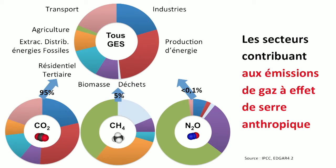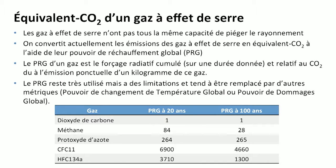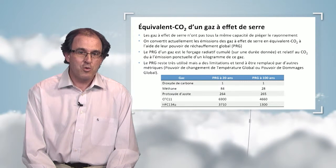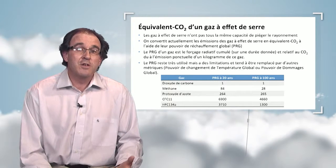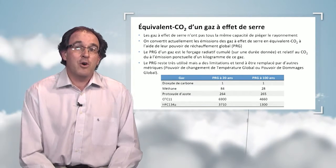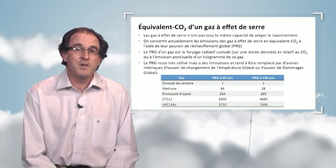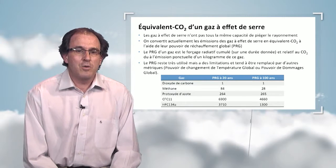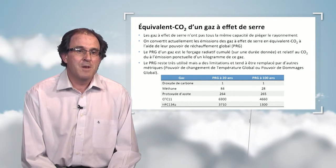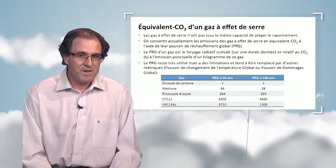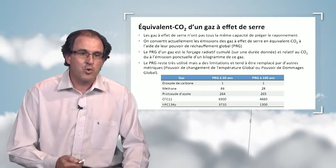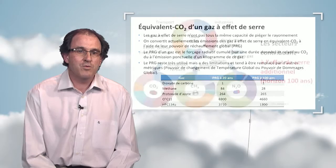However, we cannot limit ourselves to masses. If we want to look at the impact of each of these gases on climate change, we need to convert emissions of other gases into CO₂ equivalents, because not all gases have the same capacity to trap radiation and produce the greenhouse effect. A conversion factor is needed. The most frequently used is the PRG in French, or Global Warming Potential. Relative to CO₂, one kilogram of a gas has an equivalent in CO₂. For methane, the 100-year GWP is 28 — meaning one kilogram of methane has 28 times greater impact on the greenhouse effect than CO₂.